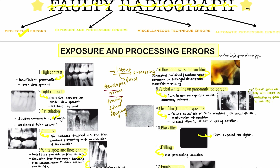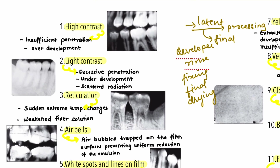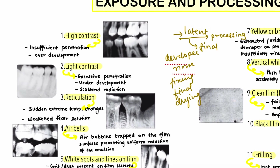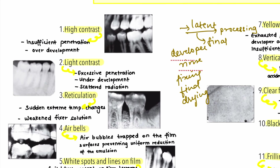If you go wrong in any of these steps, that will lead to processing errors. The first faulty radiograph under exposure and processing errors is high contrast, where the radiograph looks comparatively darker. The first reason is insufficient penetration of the x-ray beam — in that case, you need to increase the kilovoltage peak. Another reason is over-development; you need to use the proper time-temperature method.